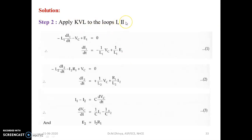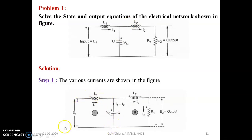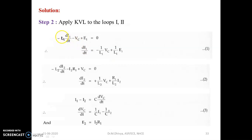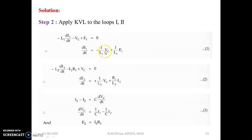Apply KVL to loops 1 and 2. For loop 1, the equation is: minus L1 times dI1/dt minus Vc plus E1 equals 0. Rearranging, we get dI1/dt equals minus 1/L1 times Vc plus 1/L1 times E1.